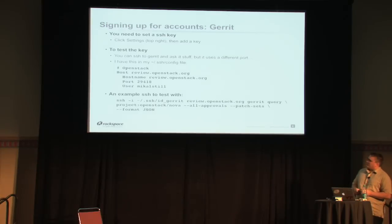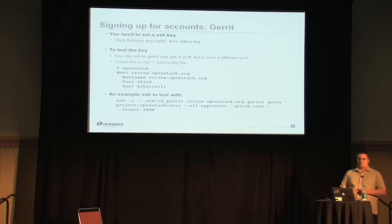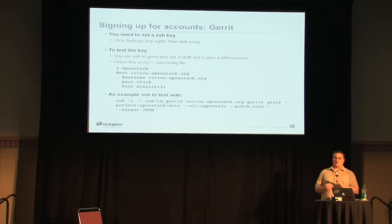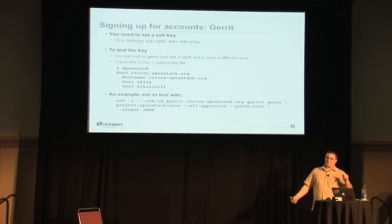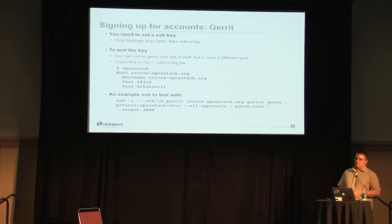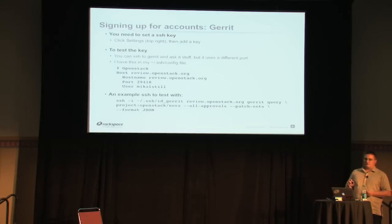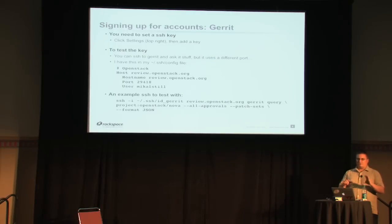Gerrit is kind of cool. There's a command line that SSHes to Gerrit and says give me all the code reviews for Nova as JSON, and what you get is a big stream of everything currently happening on the Nova project in an easily parsable format. I have a bunch of scripts, for example, that let me know when files I've previously modified are coming up for review again. You can start to automate your world a little bit. One of the other Nova cores actually does all his reviews through this SSH interface — he doesn't use the website at all.